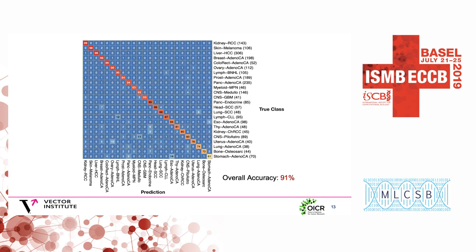This confusion matrix is averaged across all 10 models, with network predictions on the x-axis and true cancer type on the y-axis. The overall accuracy of the classifier was 91%, roughly double that of a trained pathologist given a similar task. 20 of the 24 cancer types were classified with an F1 score of at least 0.8. When the network makes misclassifications, they're often explainable — the best example being stomach cancer and esophageal cancer, which are consistently confused due to common patterns of mutational exposures, common developmental origins, and tumors that arise at the gastroesophageal junction.